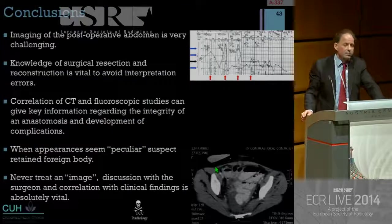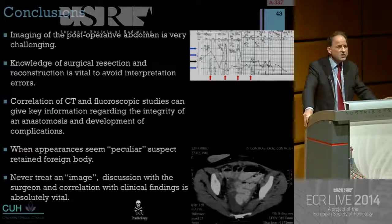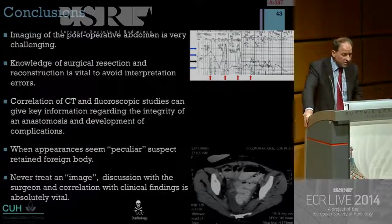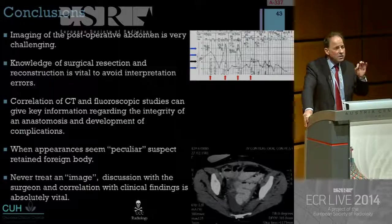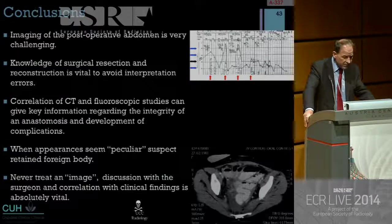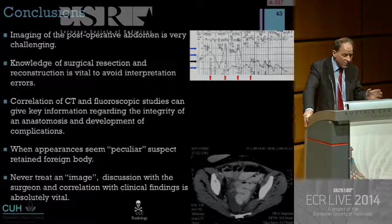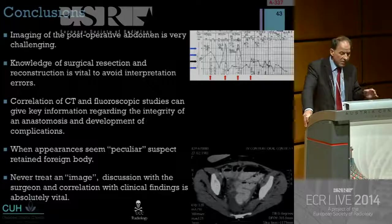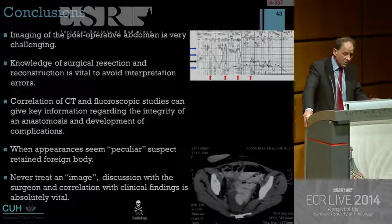In conclusion, imaging of the post-operative abdomen is very challenging. We must know about the surgical resection and what the surgeon has done to avoid misinterpreting cases. Radiologists doing this must be comfortable with barium and fluoroscopic procedures and correlate information from both to make appropriate interpretations. When you see peculiar things, consider foreign body or Surgicel. The key take-home message is we should never treat an image — we should discuss the case with the surgeon and correlate with clinical findings before a major decision is made. Thank you very much.